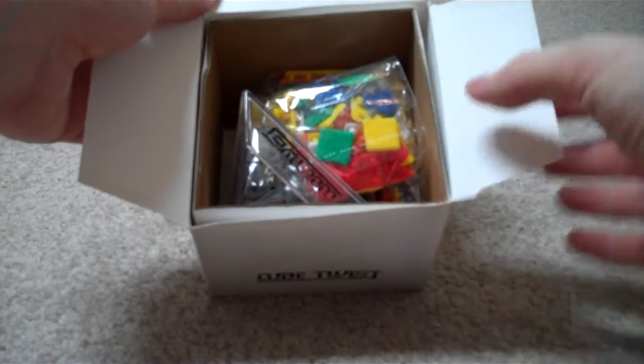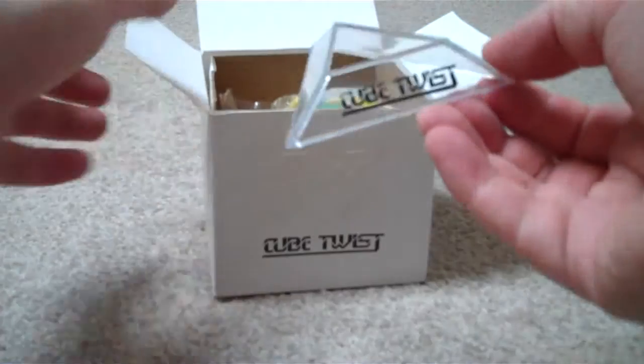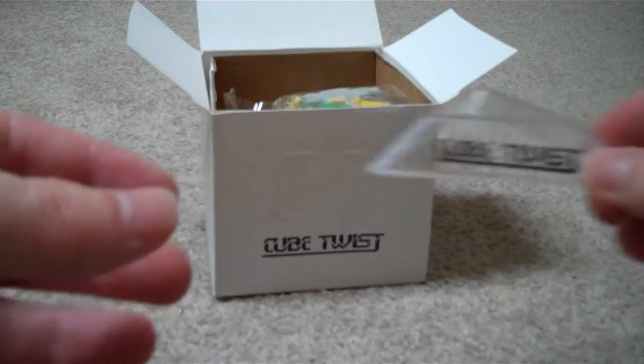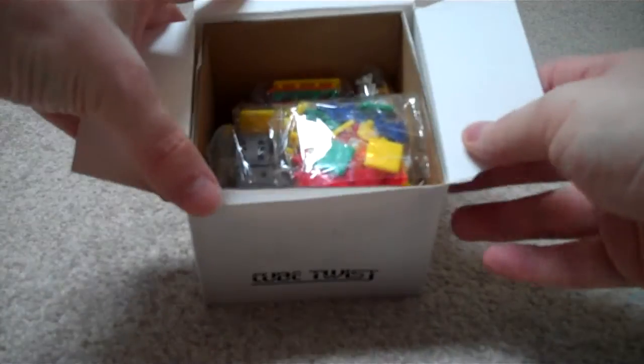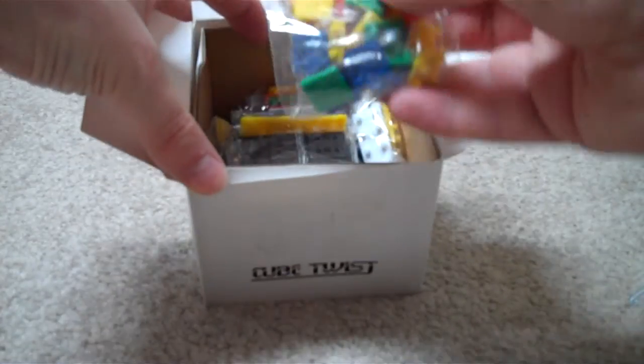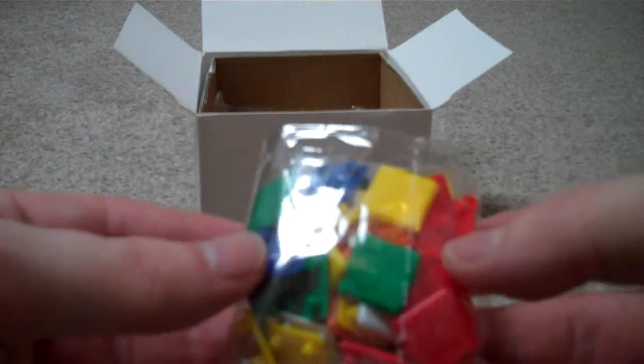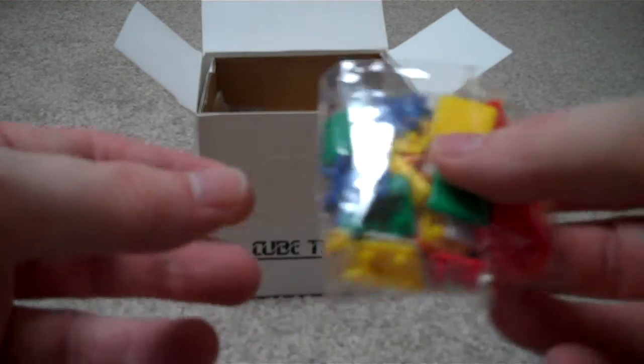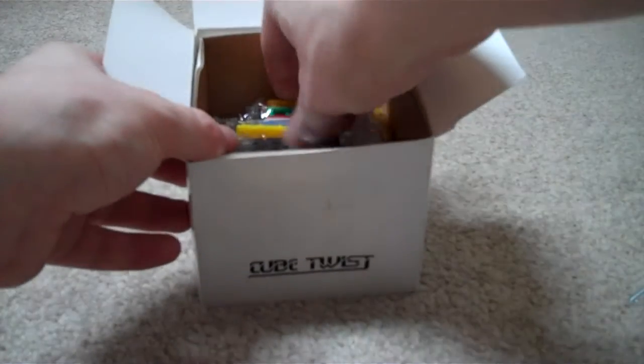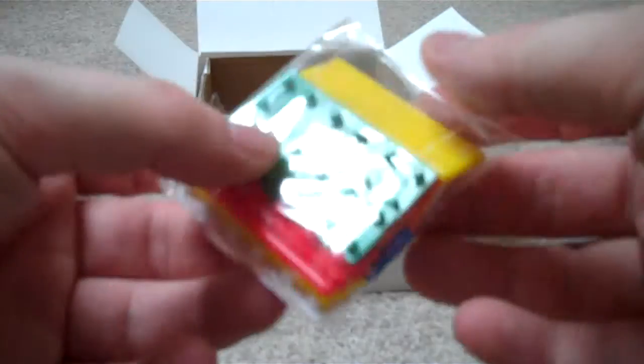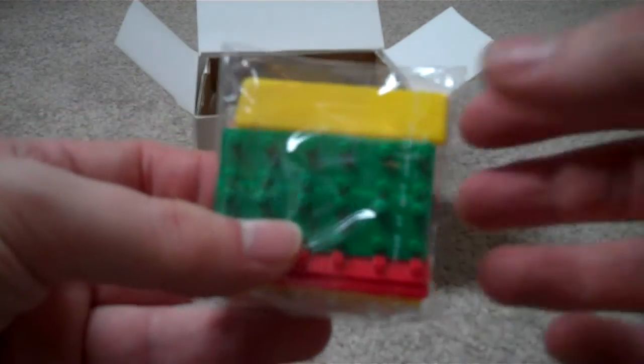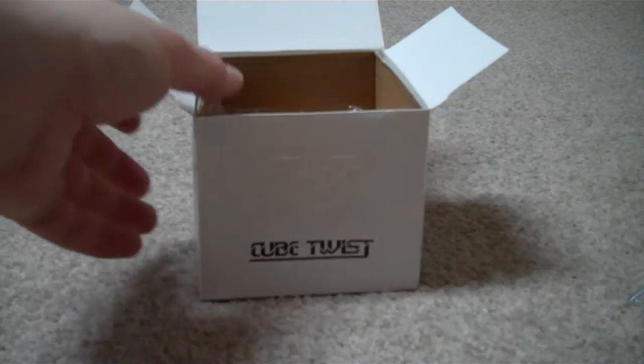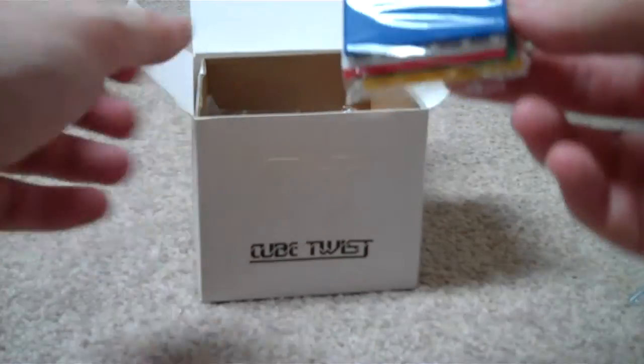So there's the contents, and you get a Cube Twist puzzle stand there. And inside you get bags with all sorts of different tiles in them. So you can just basically make up your own bandage cube. So we've got these small ones, and we've got some long ones there.